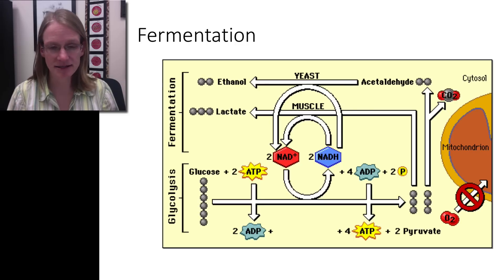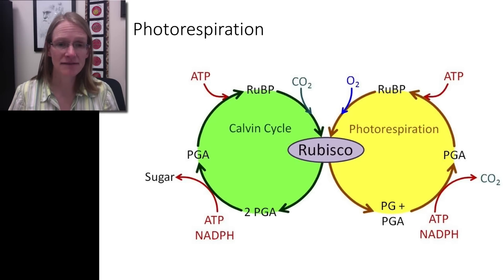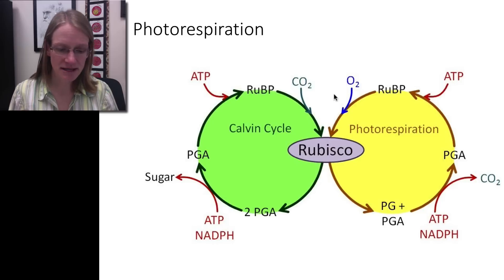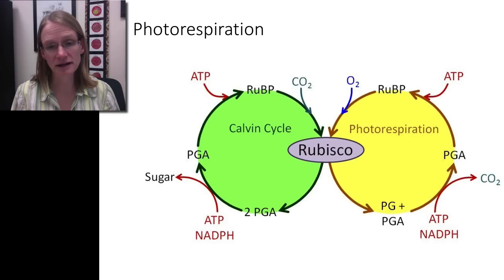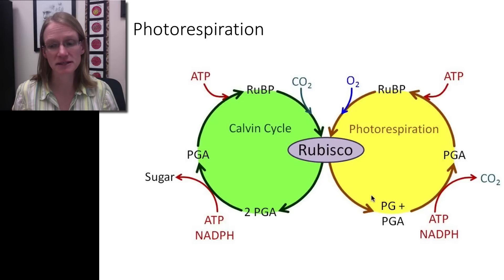Taking a step back to photosynthesis: in most cases CO2 comes in, gets fixed by rubisco, and through the Calvin cycle creates sugars. But in certain situations where cells are flooded with too little CO2 or too much oxygen, rubisco — because it evolved so long ago it can't discriminate well — will just grab oxygen instead.